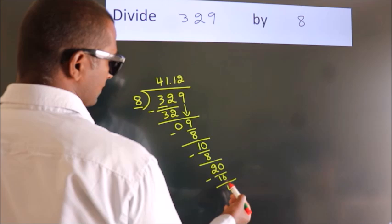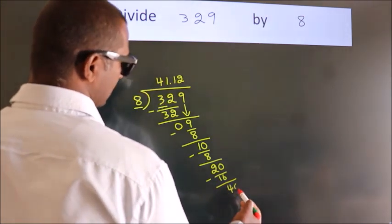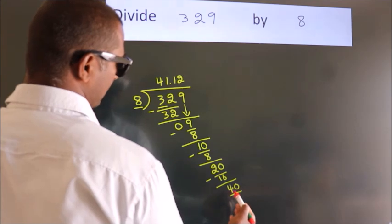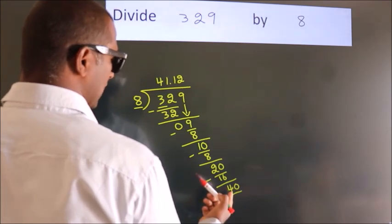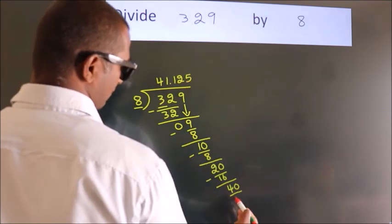After this, we already have the decimal, so directly take 0. So, 40. When do we get 40 in the 8 table? 8 fives, 40.